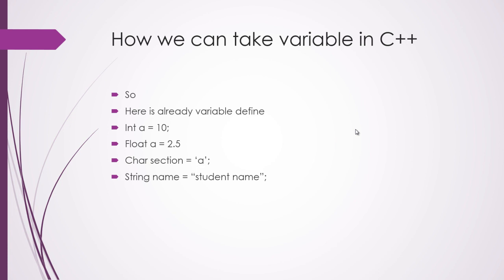Now I'll show you how we can write a variable in C++ language. Here you can see some variables already defined — int a equal to 10 — that means we are storing the value 10 into variable a. The data type int is integer, which I already told you about in my previous video.